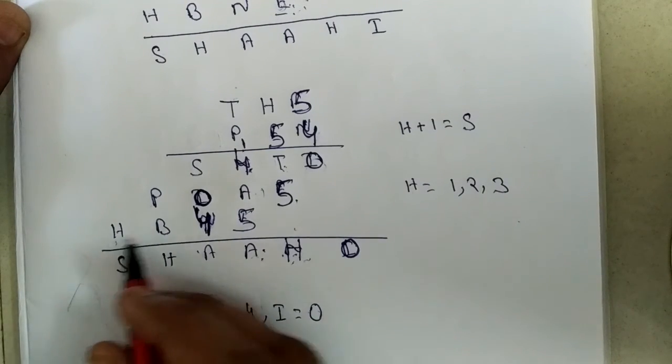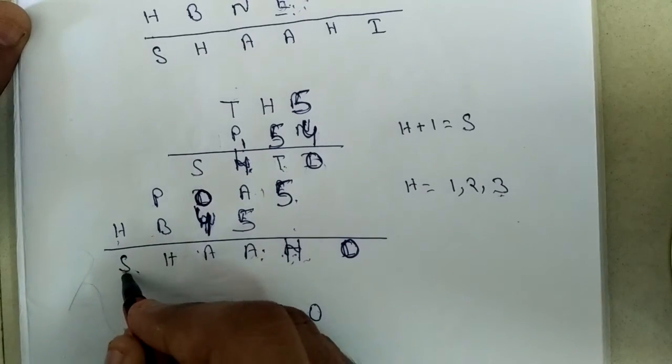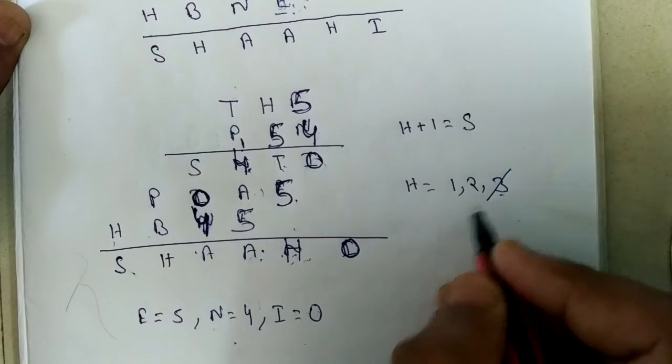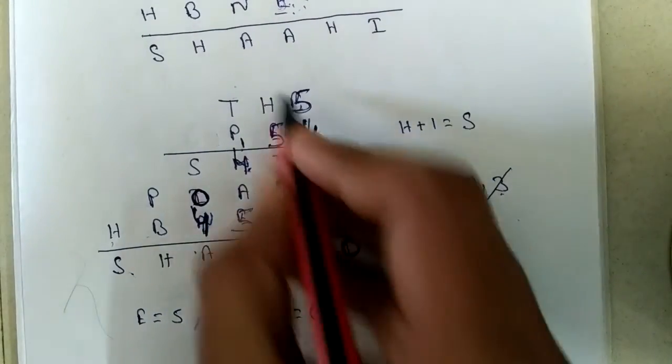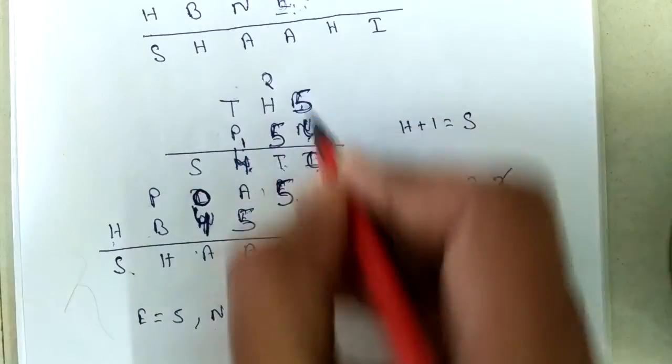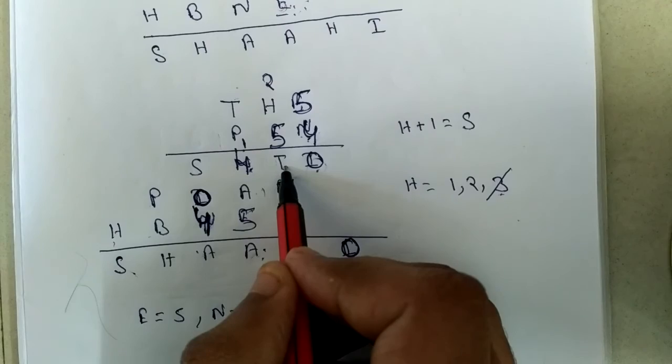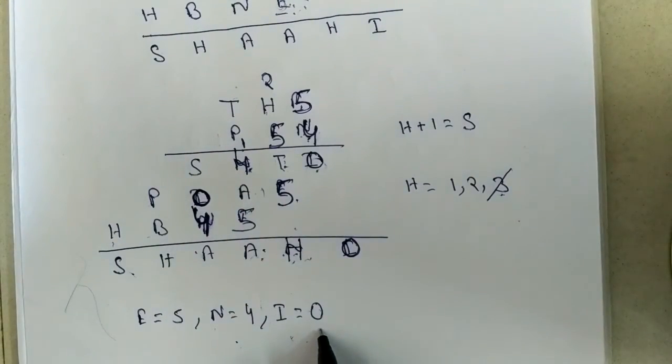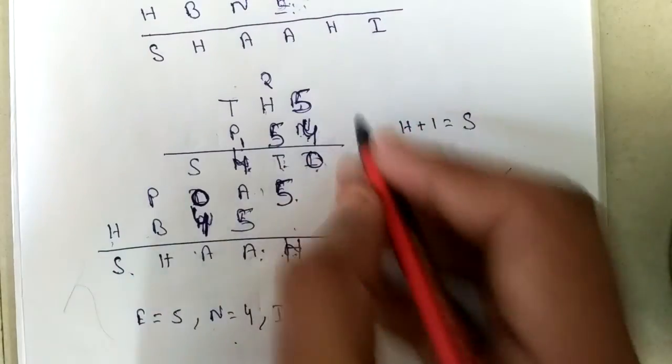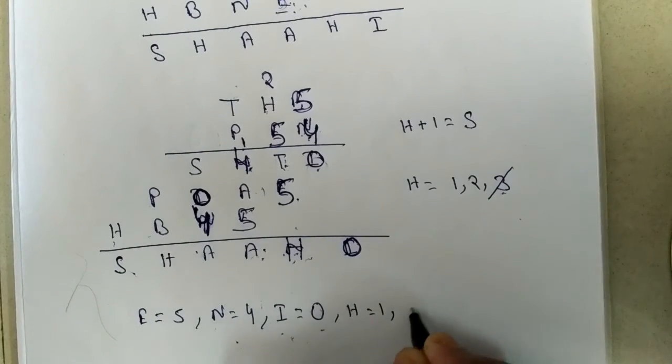Now also we are seeing here that 5 into 4 equals 20, means 2 comes here. If 4 into 1, T becomes 6. 4 into 2 equals 8, T becomes 0. 0 is already occupied by I. So H must be 1. If H must be 1, then S must be 2.